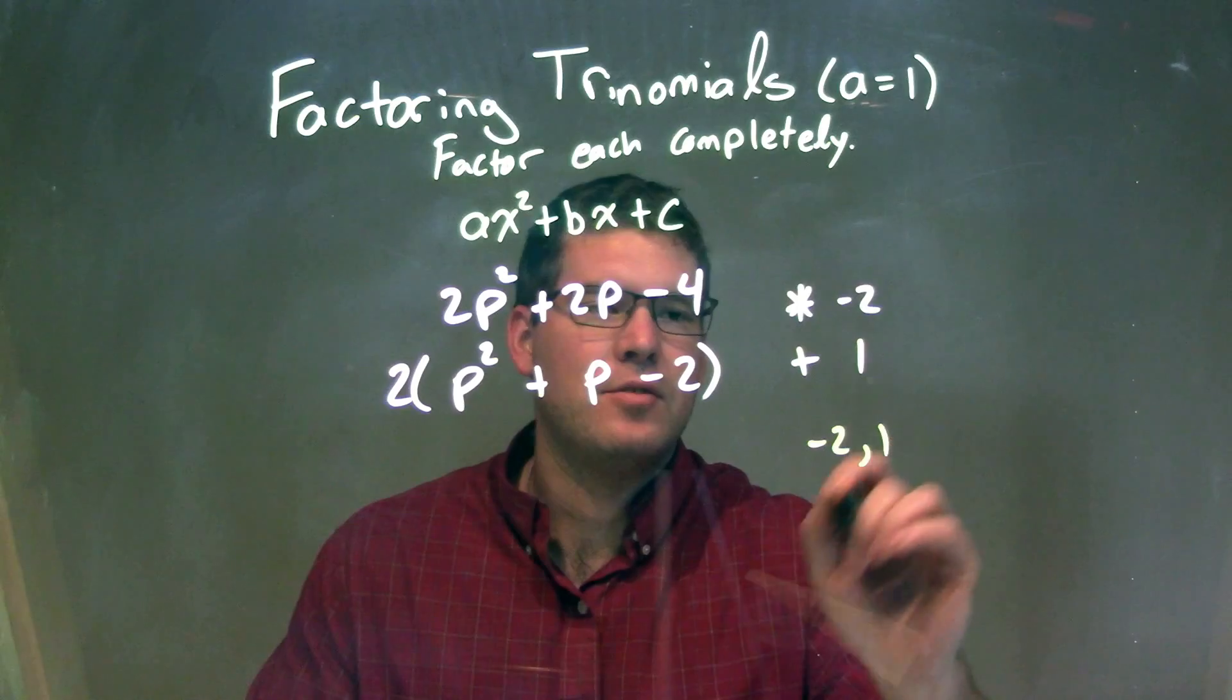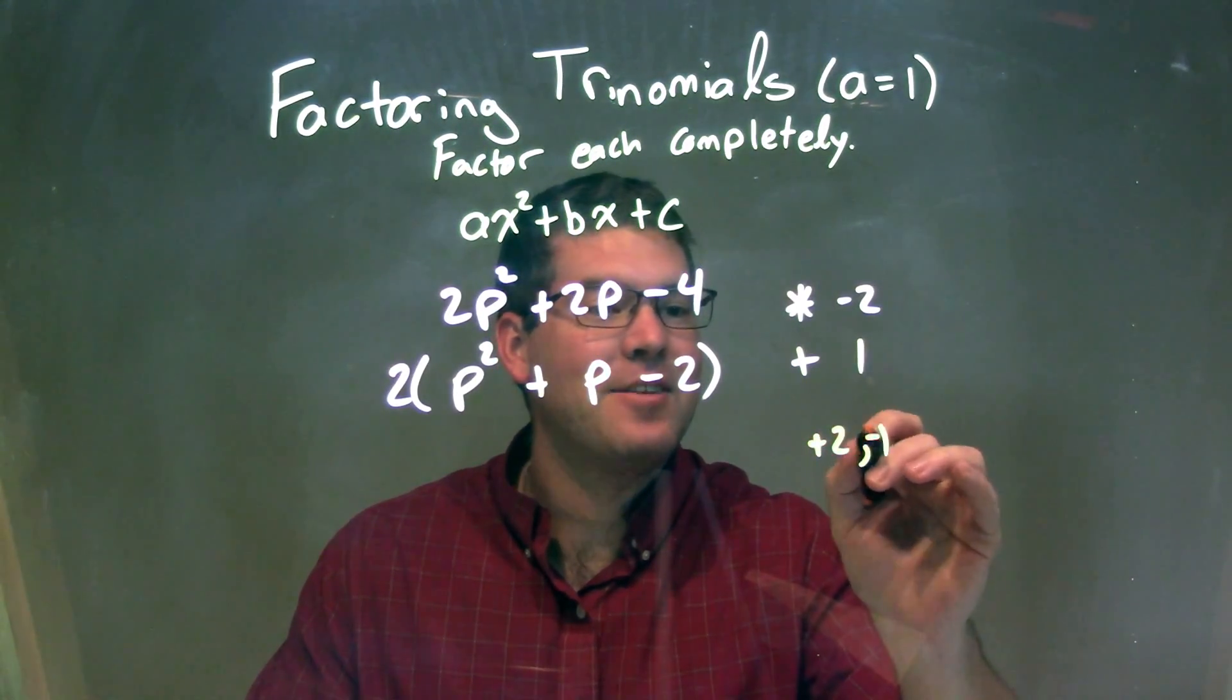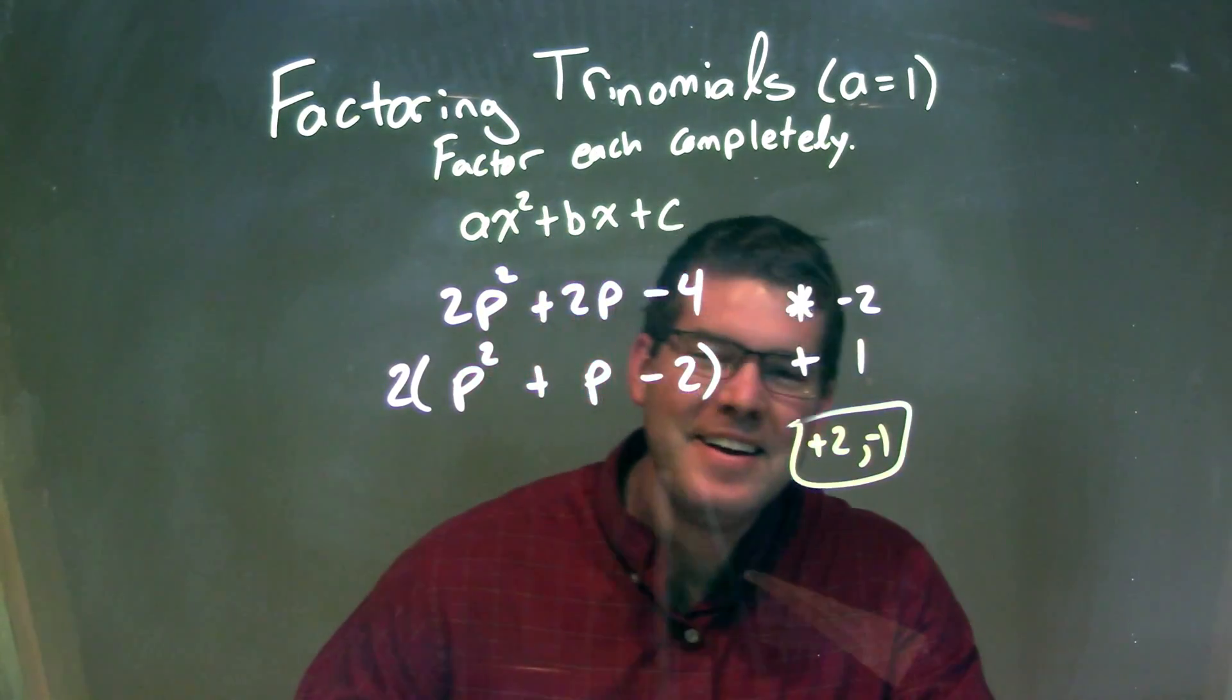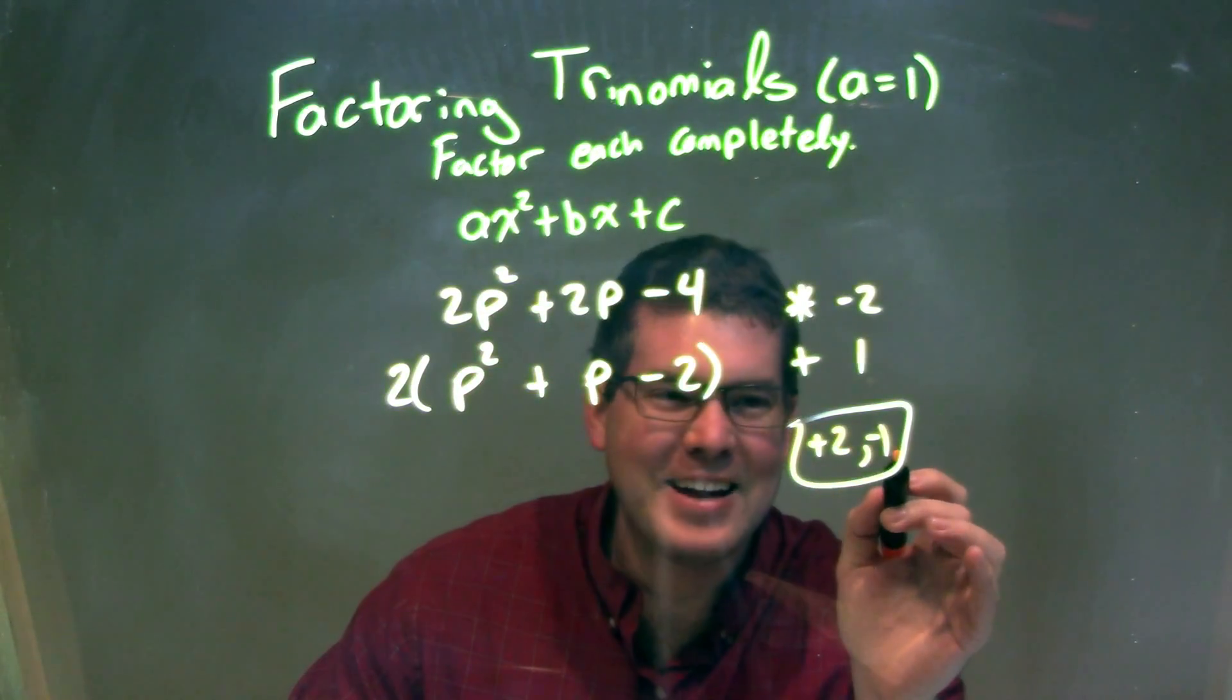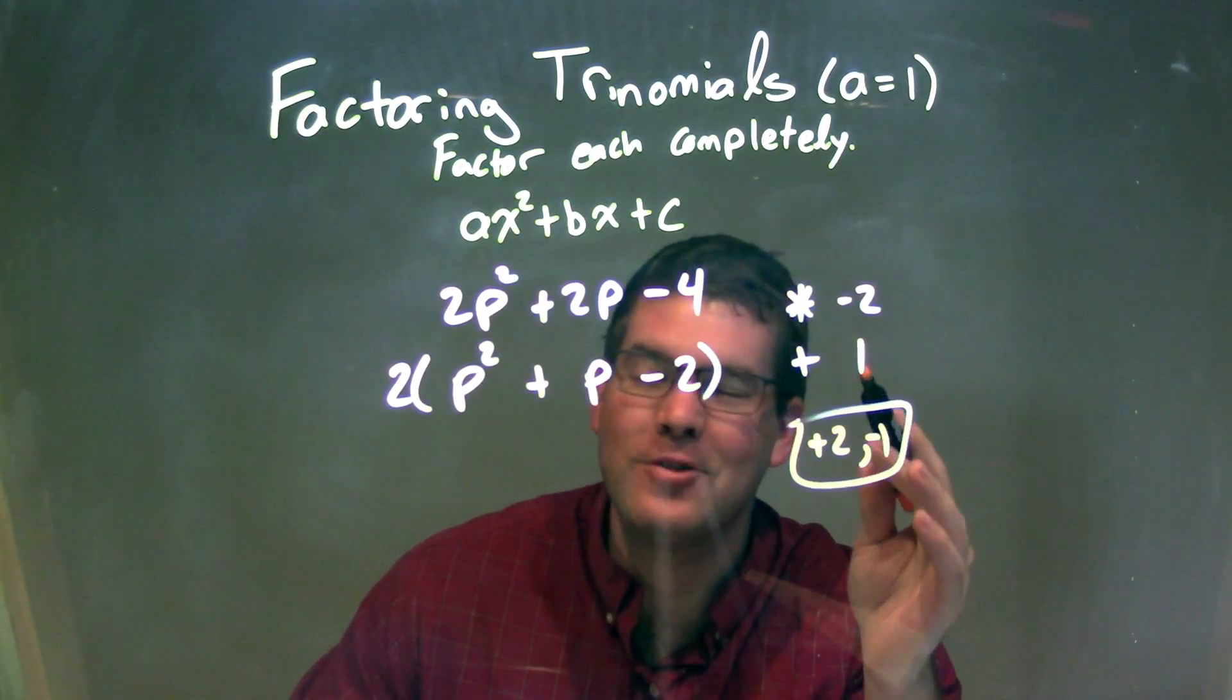But if I'm adding them together to be a positive 1, I'm thinking positive 2 and negative 1. So a positive 2 and a negative 1 together multiply to be negative 2 but add to be a positive 1.